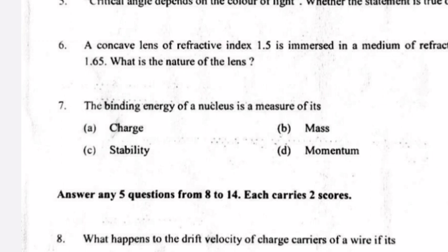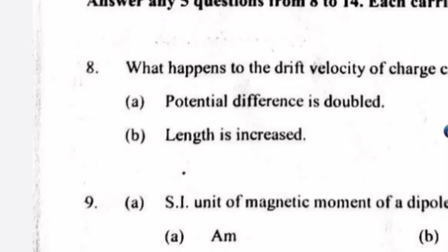Question 8: What happens to the drift velocity of charge carriers of a wire if — A. potential difference is doubled, B. length is increased? Answer: A. Doubled, since VD equals eE by m times tau equals eV by mL. B. Decreases.